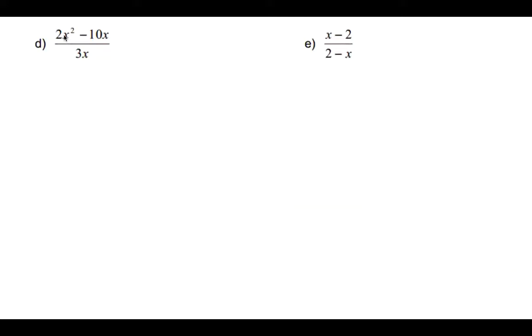The next one, you can factor out a 2x, left with x minus 5. You can reduce the x's, and you're left with 2x minus 5 over 3. And then you've got the restriction that x cannot equal 0, because if it's 0, you'd have 3 times 0, and you can't have the denominator being 0.